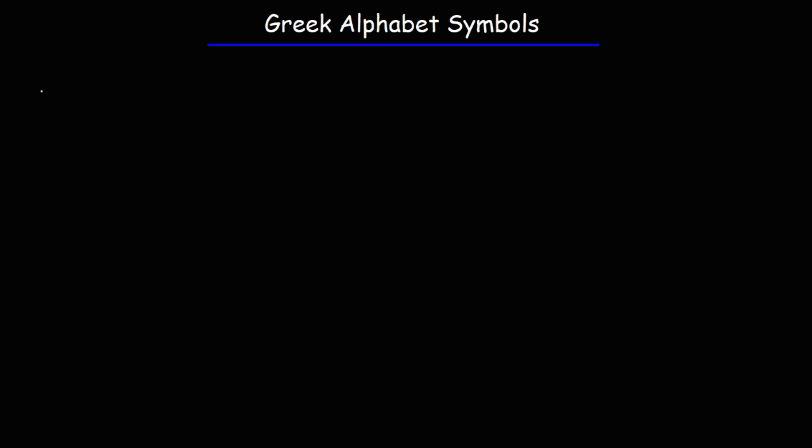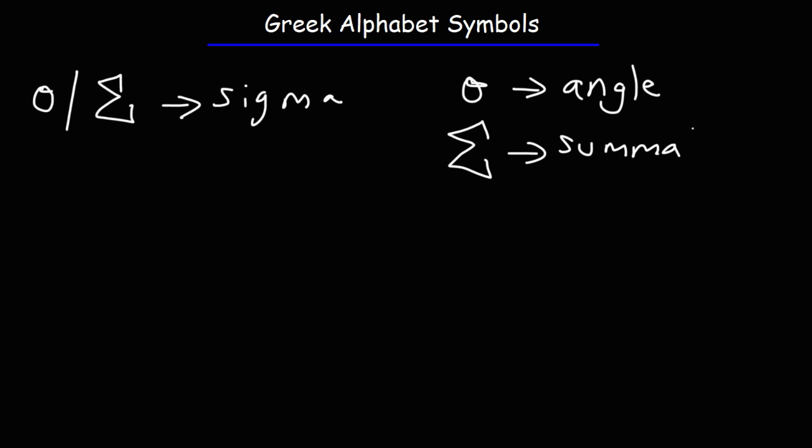Now the next symbol is sigma which you'll see it in two forms. That's the lowercase of sigma and this is the uppercase version of sigma. So the lowercase of sigma will typically correspond to an angle, just as theta would represent an angle in trigonometry. The uppercase version of sigma you'll see this in math. This represents summation or sum. So for instance if we have the sigma of x squared starting from one to five, this would be one squared plus two squared plus three squared plus four squared plus five squared.